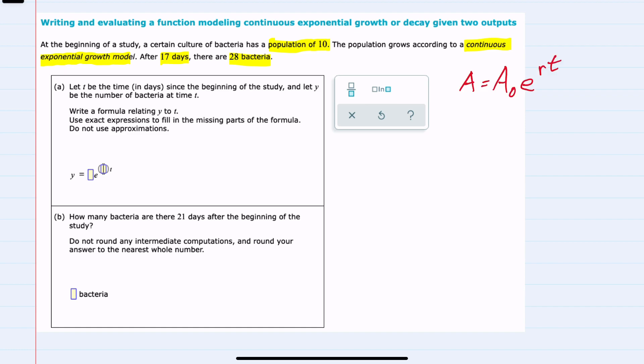We'll start with the general formula for exponential growth and decay. The amount of the substance equals its initial amount times e raised to the power of r times t, where r is the rate and t is the time elapsed.